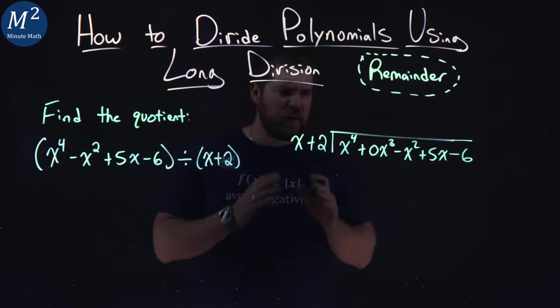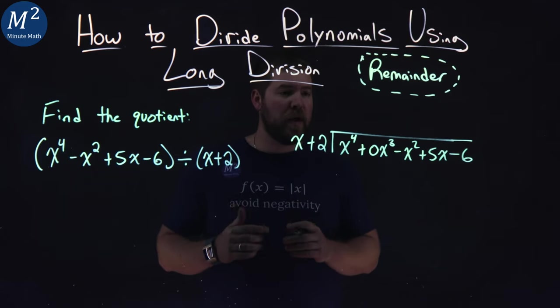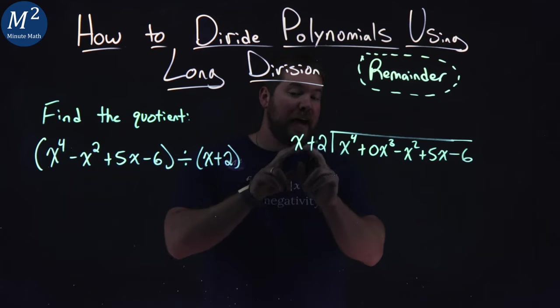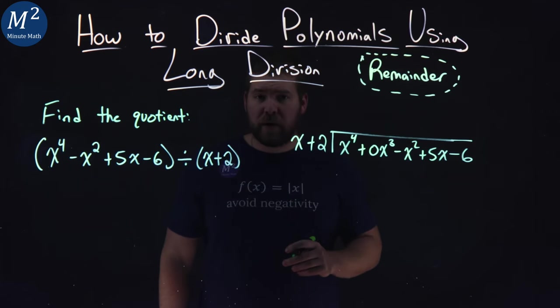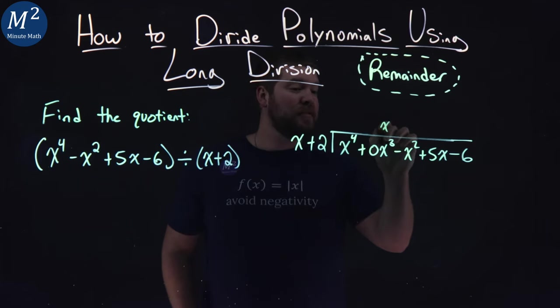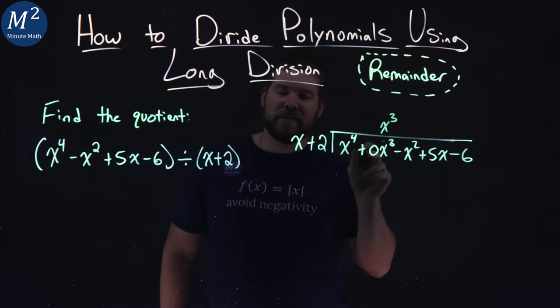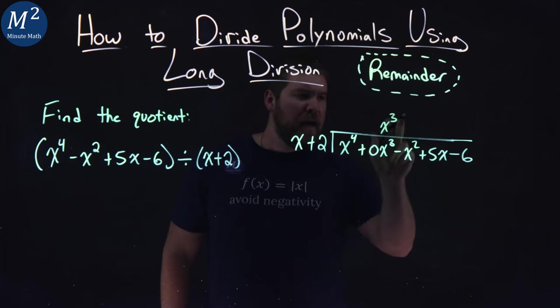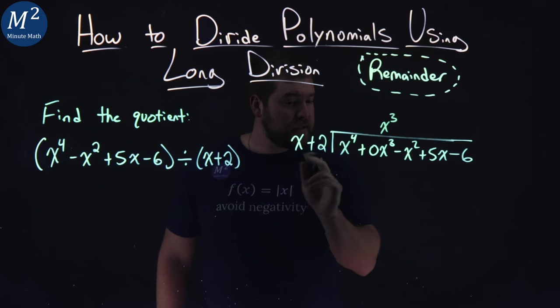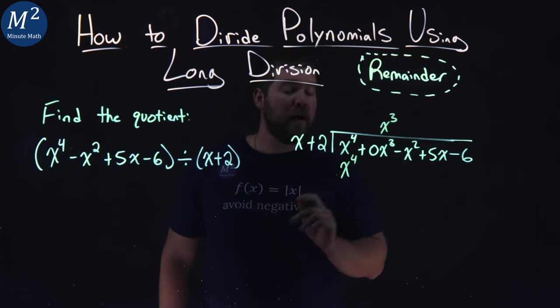Now we have to ask ourselves this question: what times x, the first part here, gives me x to the fourth? And that's going to be x to the third. We want to line it over our x to the third value. Now you can see why it's important. x to the third times x is x to the fourth, and that's what we wanted.